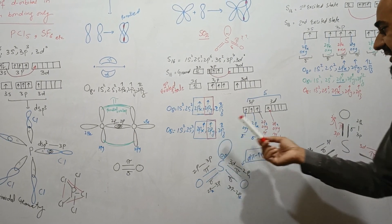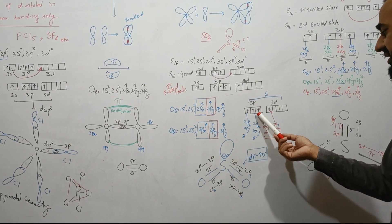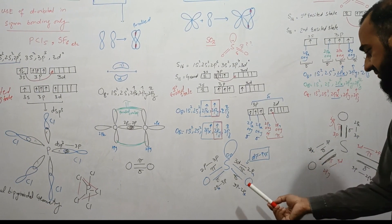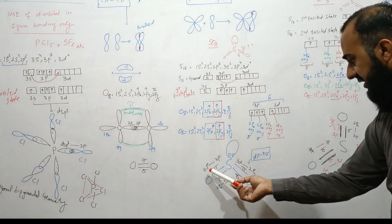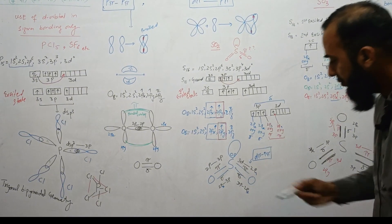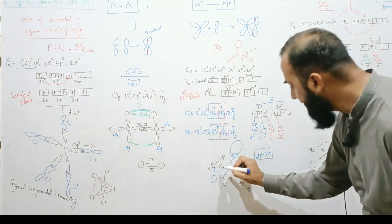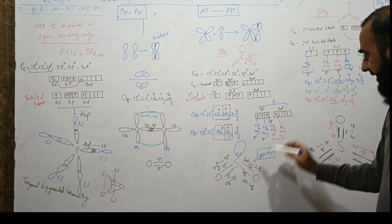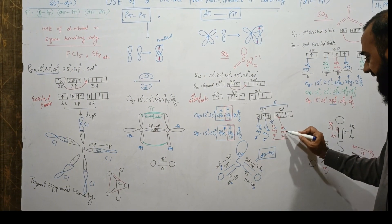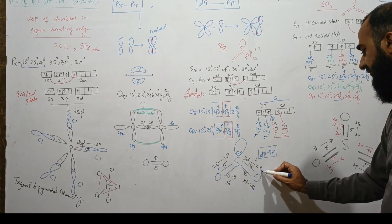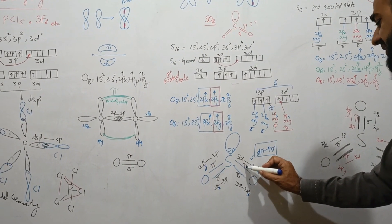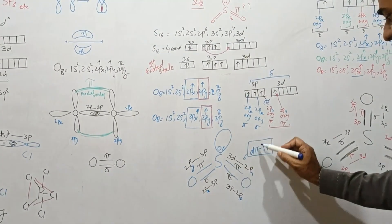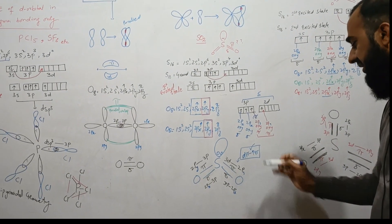The 3p of sulfur overlaps with the 2py of one oxygen — a parallel overlap — forming the first pi bond. Then the 3d of sulfur overlaps with the 2py of the other oxygen, forming another pi bond. This second pi bond is specifically a dπpπ bond, since it involves the d orbital of sulfur and the p orbital of oxygen.